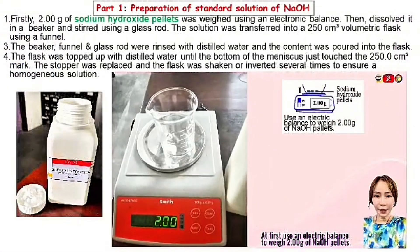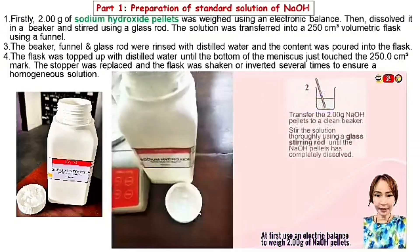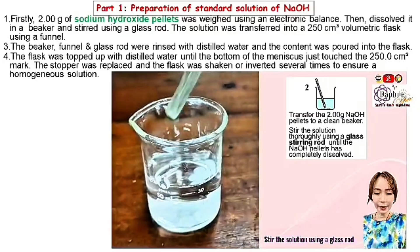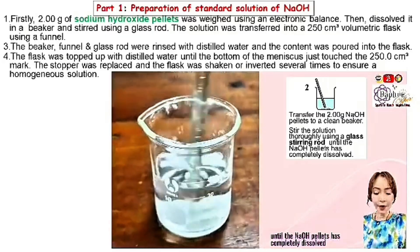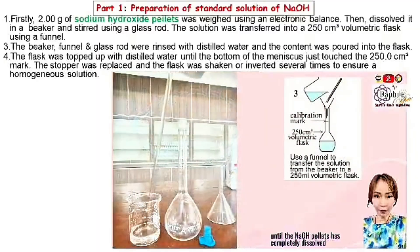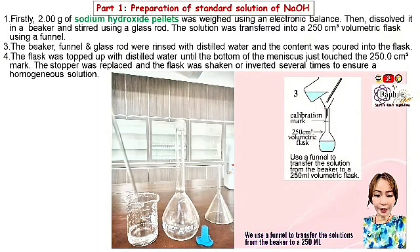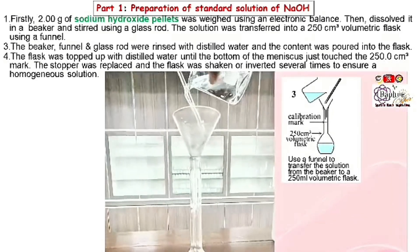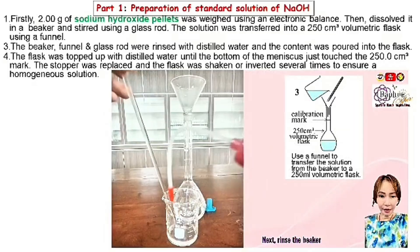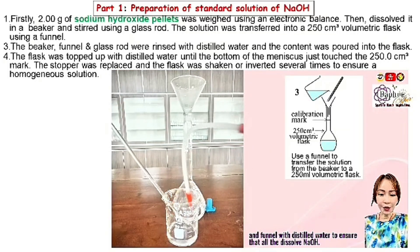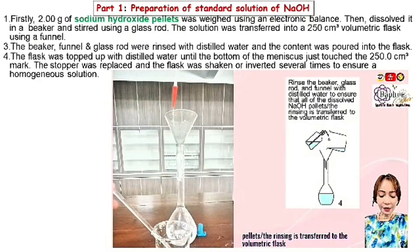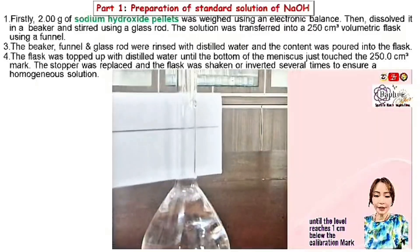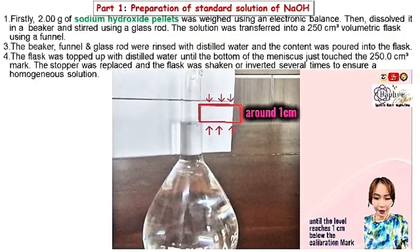To prepare the NaOH solution: first, use an electric balance to weigh two grams of NaOH pellets, then transfer them to a clean beaker and stir with a glass rod until completely dissolved. Next, use a funnel to transfer the solution into a 250 ml volumetric flask. Rinse the beaker, glass rod, and funnel with distilled water to ensure all dissolved NaOH is transferred. Add distilled water until the level is about 1 cm below the calibration mark.